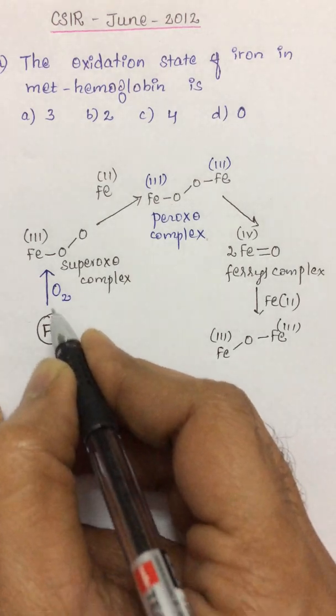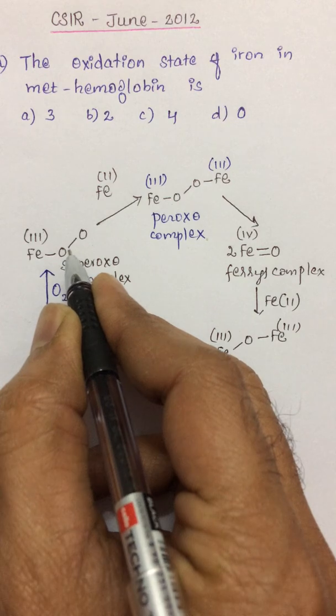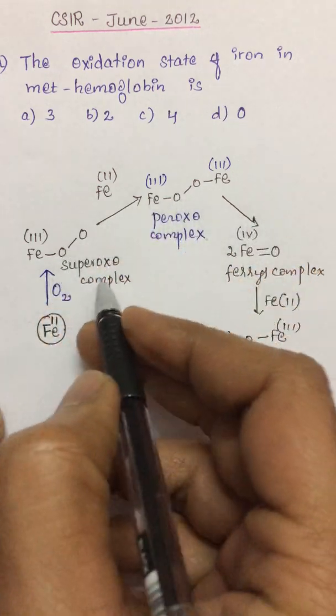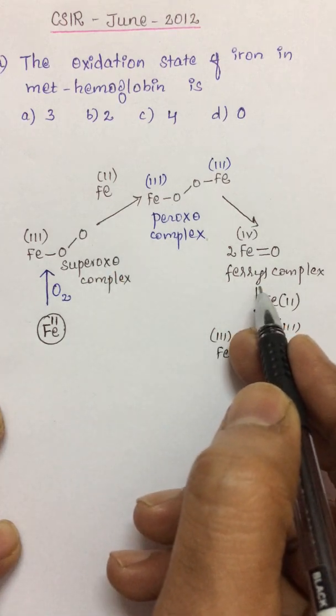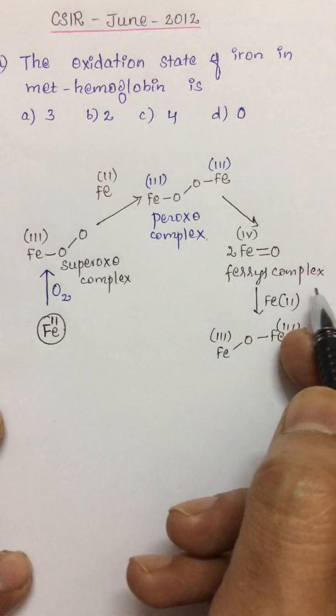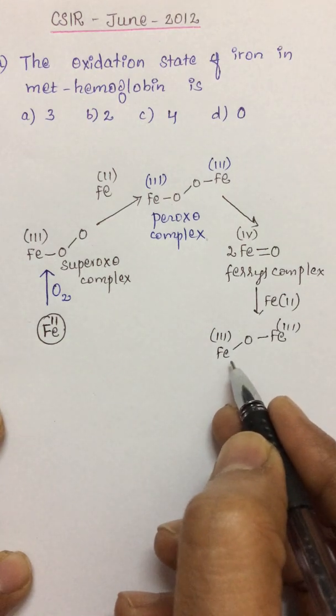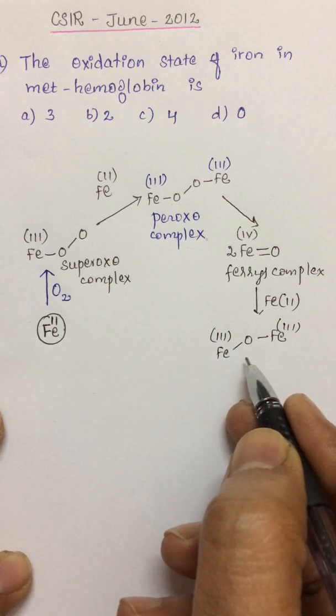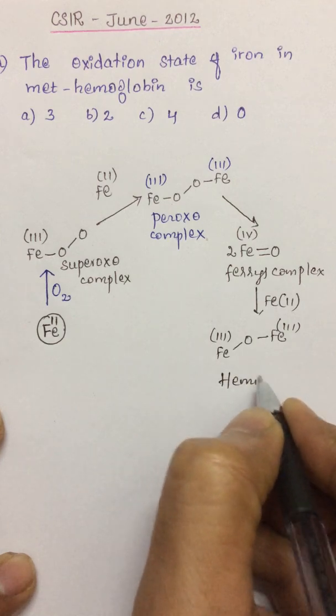So this is an oxygen which is just locked between the two irons and such iron loses its reversibility. Usually in hemoglobin, whenever it binds to dioxygen, we say that the oxygen binding is reversible. But as the reaction proceeds, a superoxo complex is converted into a peroxo complex, later on it is converted into a ferryl complex, and finally it is converting into a complex where the reversible oxygen binding is completely lost. This becomes irreversible and this complex is referred to as hemiglobin.